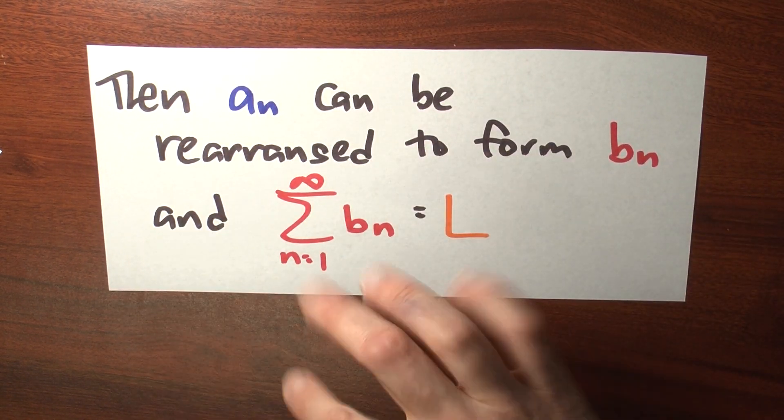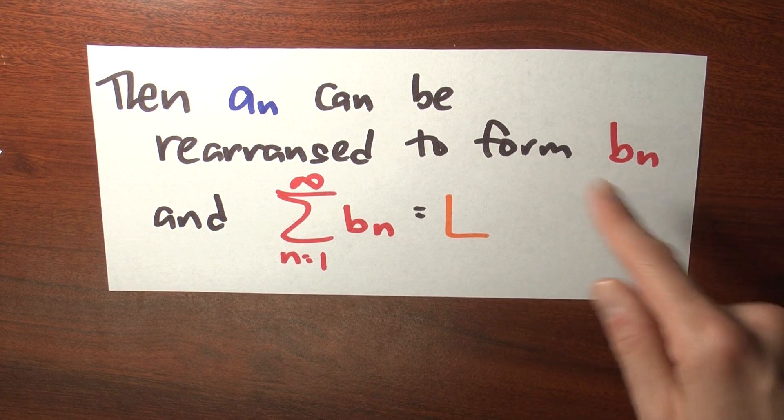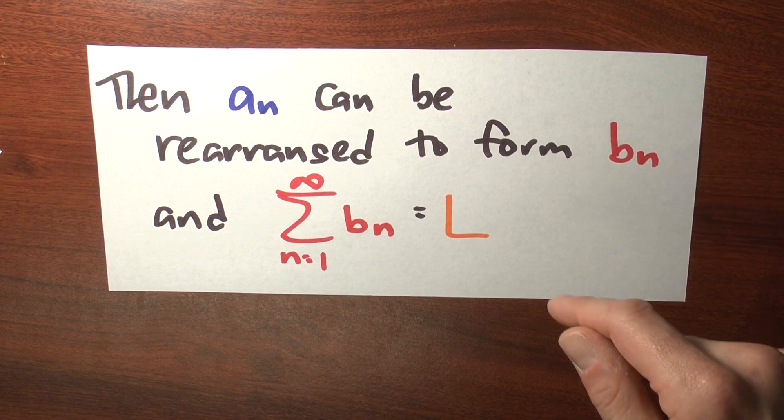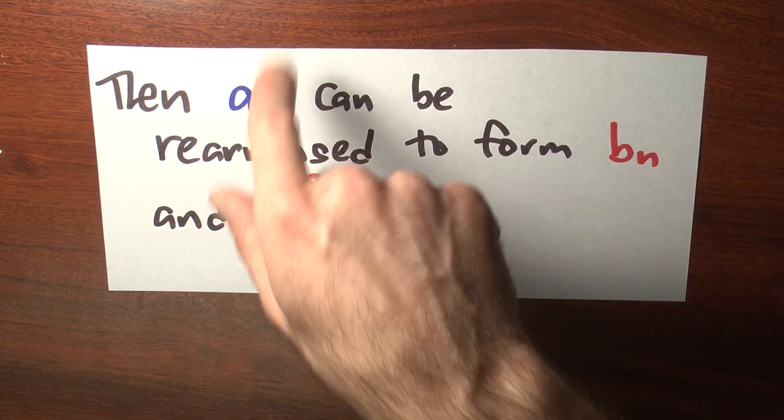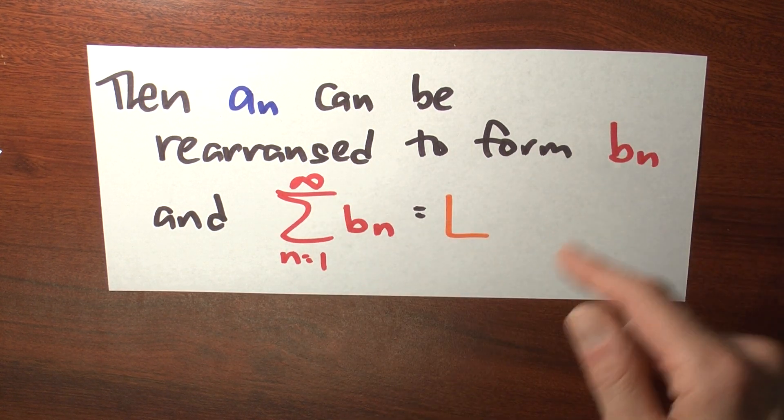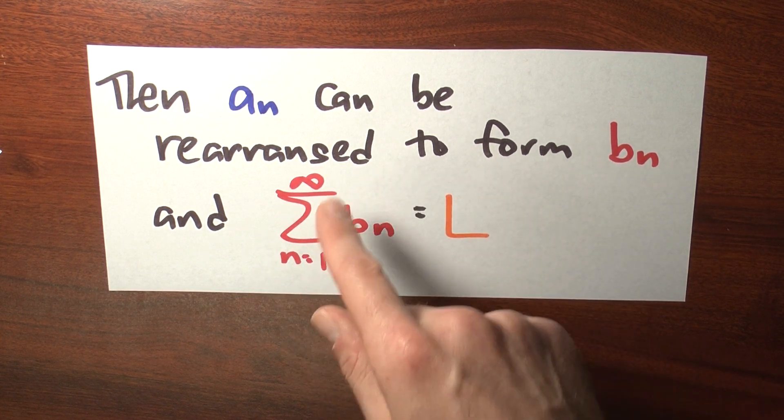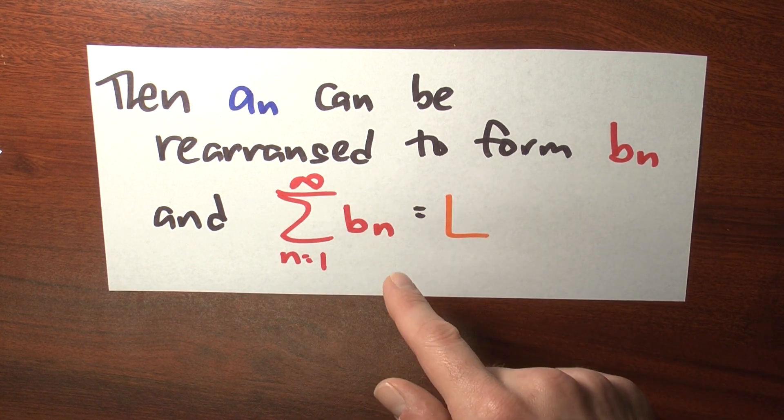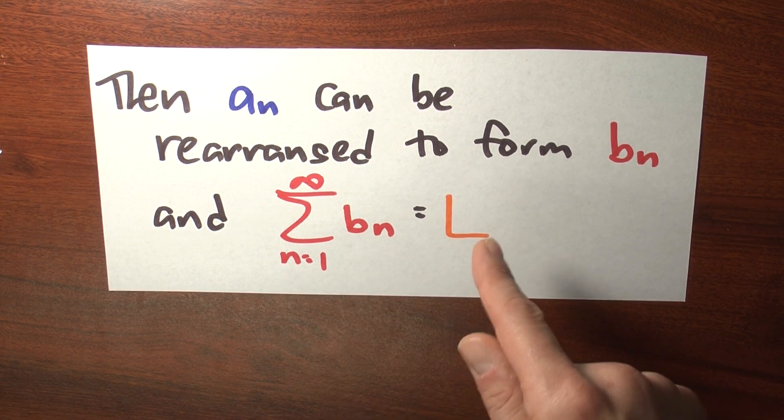Then, that sequence a_n can be rearranged to form a new sequence b_n. So the b_n sequence contains all the terms of the a_n sequence, just in a different order. Well, that rearranged sequence b_n, if you form a series out of it, the sum n goes from 1 to infinity of b_n. The value of that series is L.